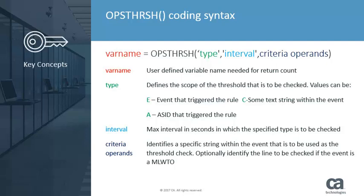Let's look at the general coding syntax for the OpsThresh function. A user-defined simple variable name, or var name, is needed to call or invoke the function. The threshold type is the first required argument to the function — it defines the scope of the threshold. Currently, there are three values for the threshold type.